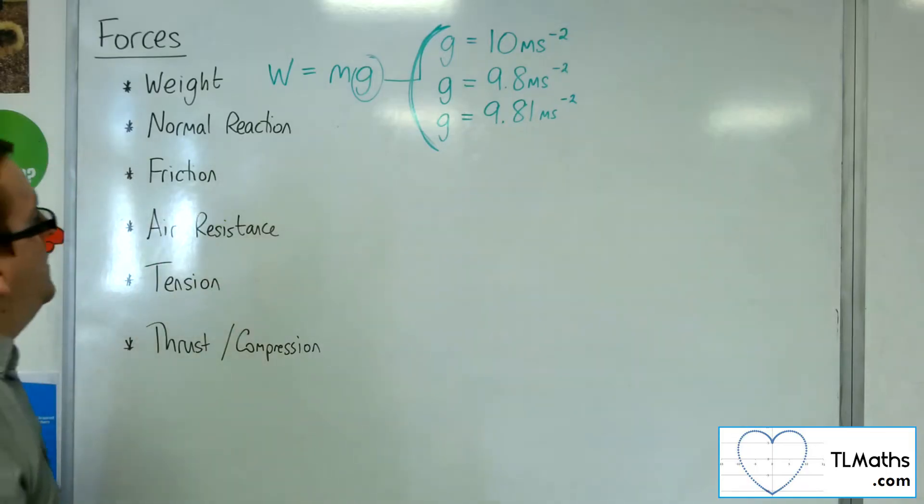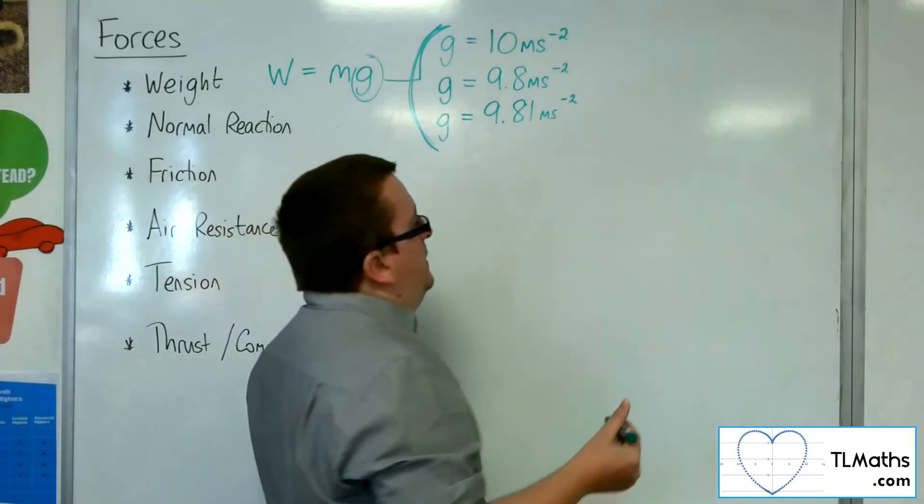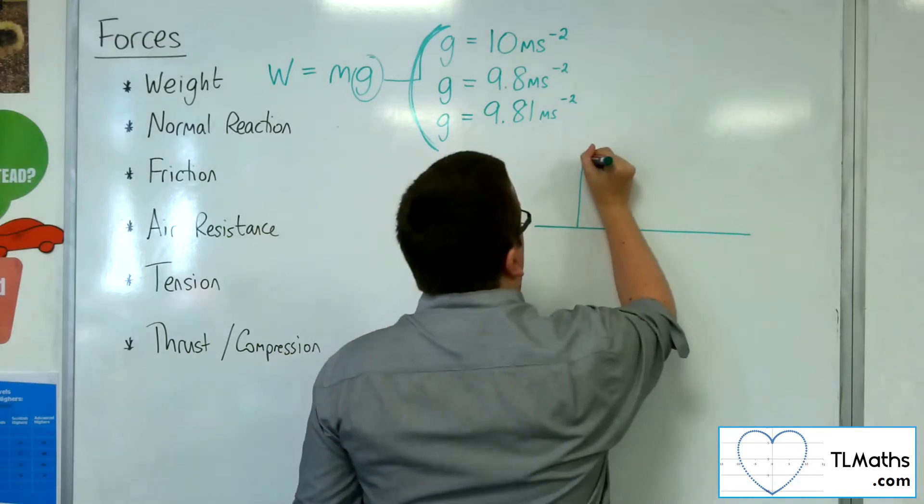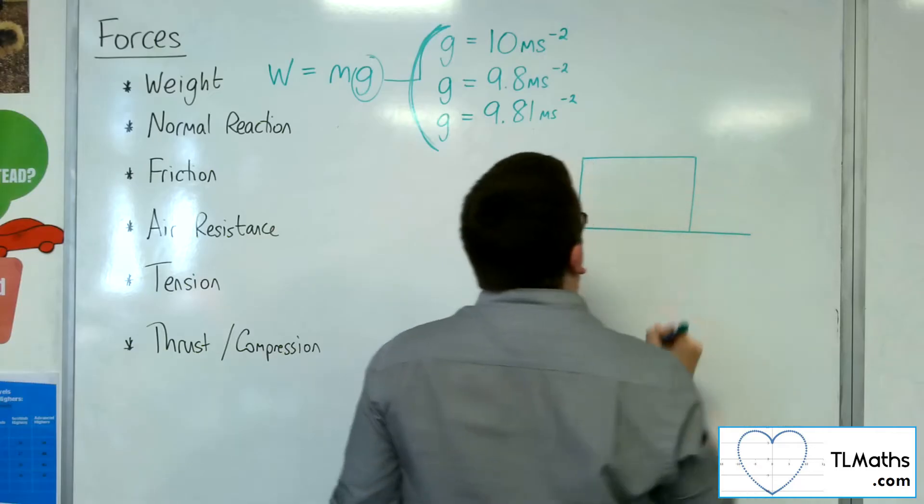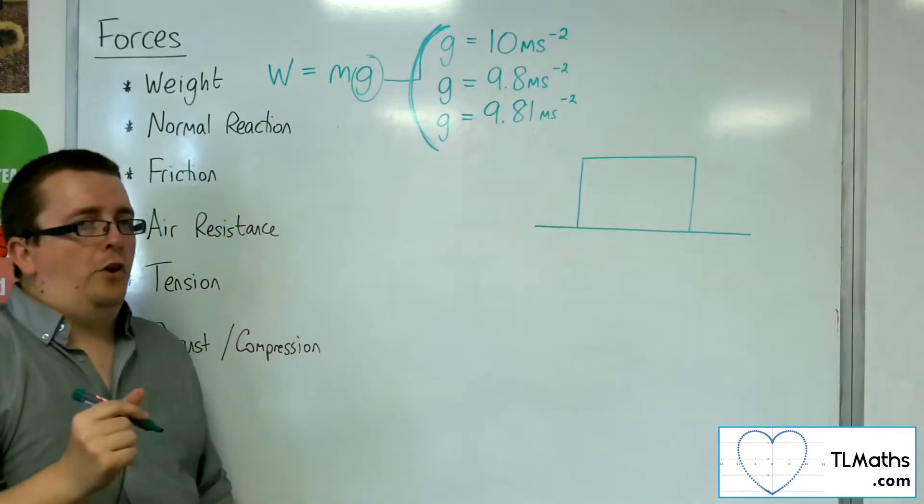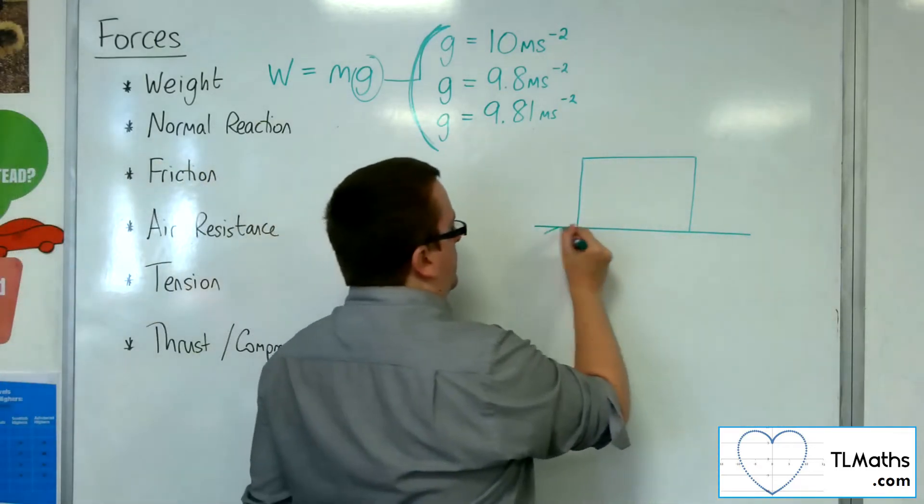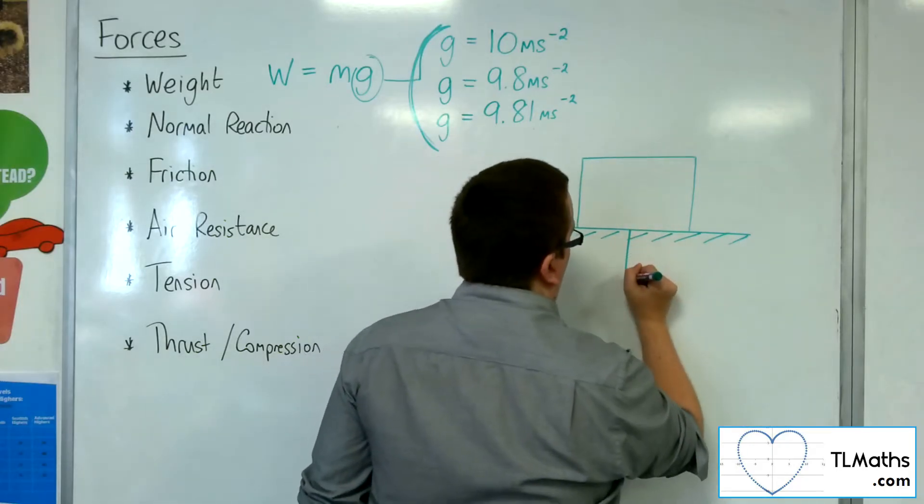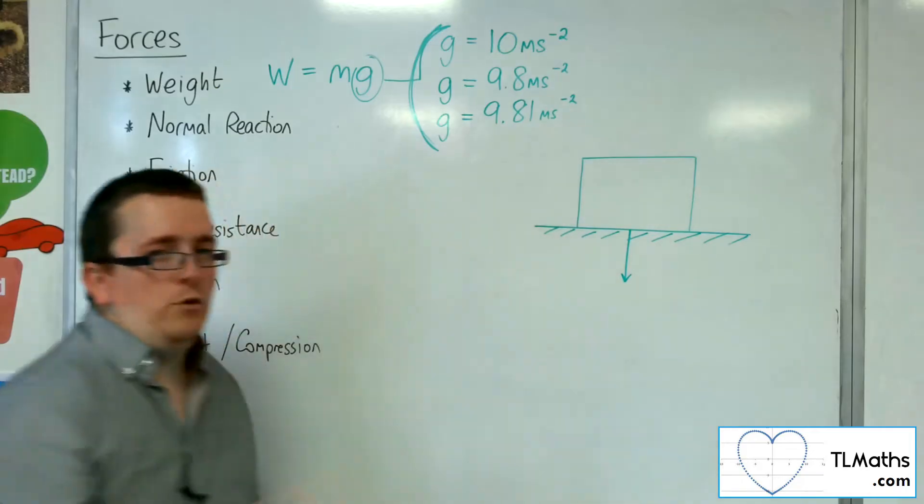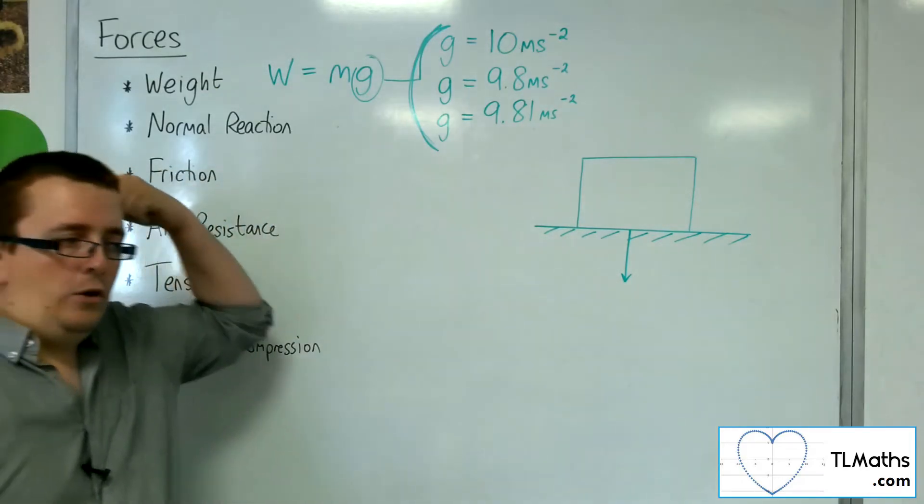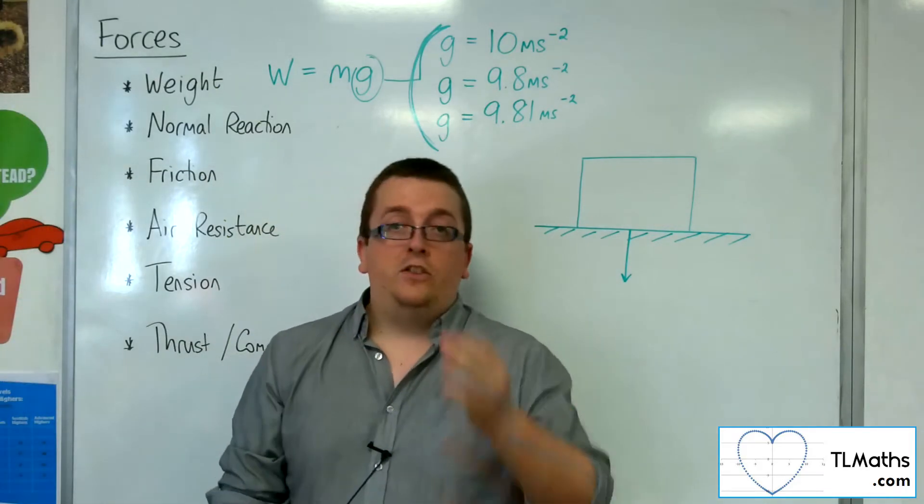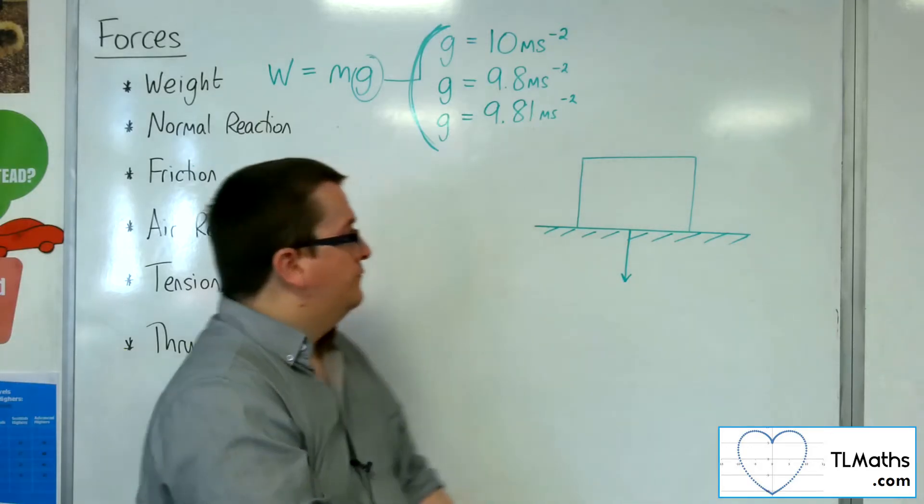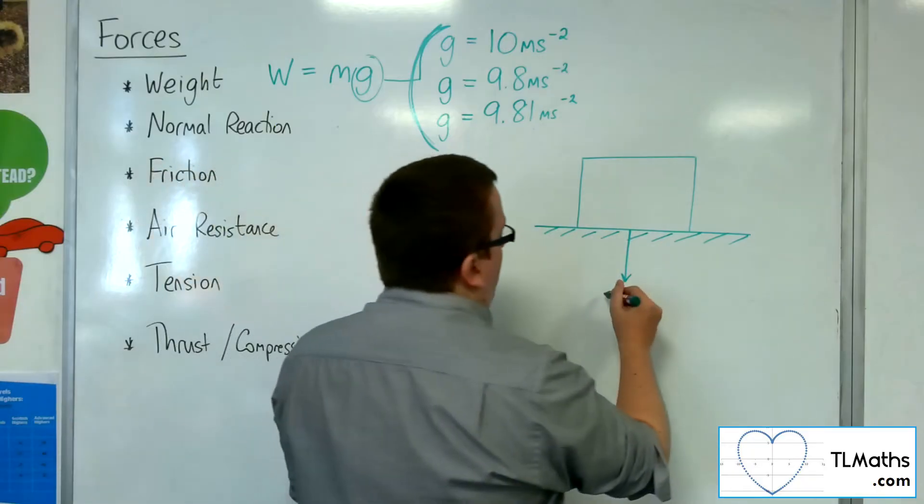Now, let's have a think about the normal reaction. What I'm going to do is draw a box on a table. There's my box on a table. The weight of the box works vertically downwards, so the weight as I'm pressing into the ground is going vertically downwards to the centre of the earth. And that's how we're going to label it.